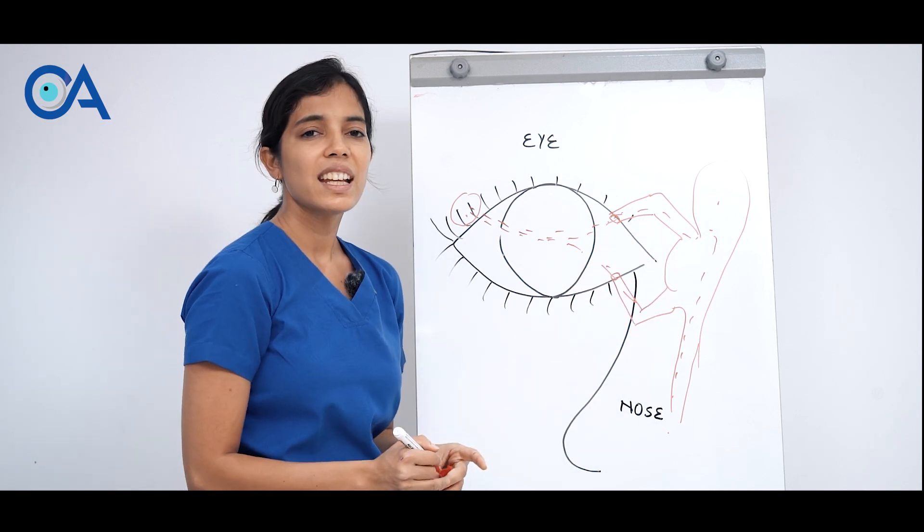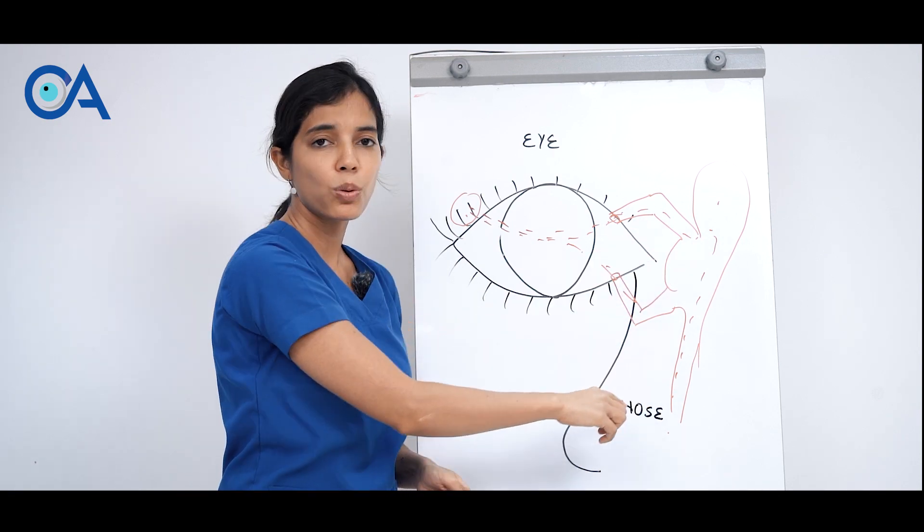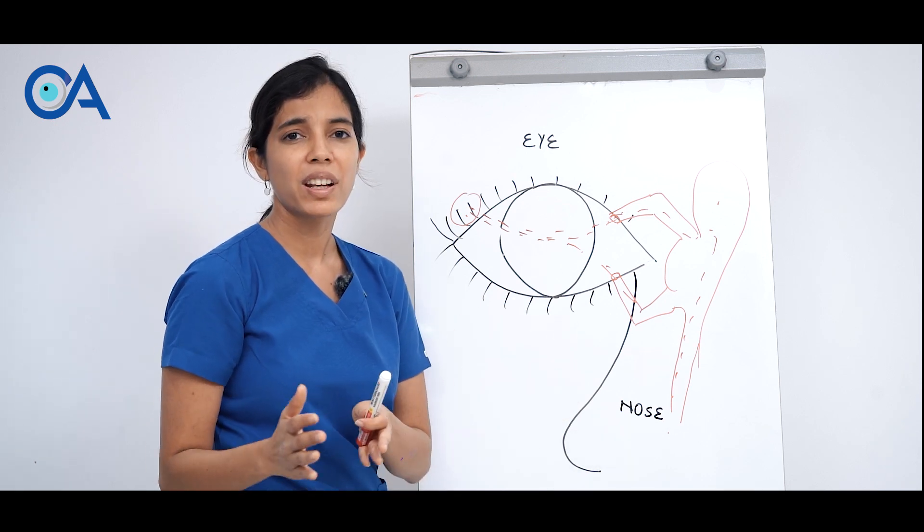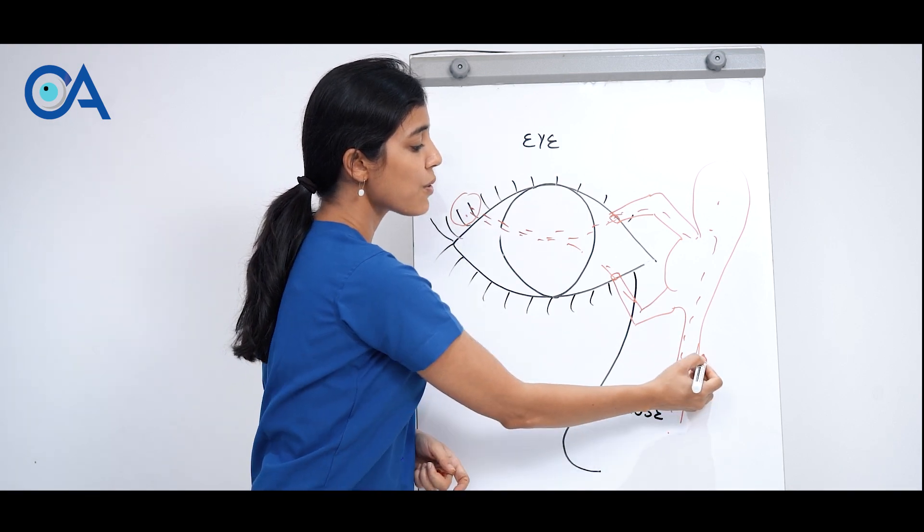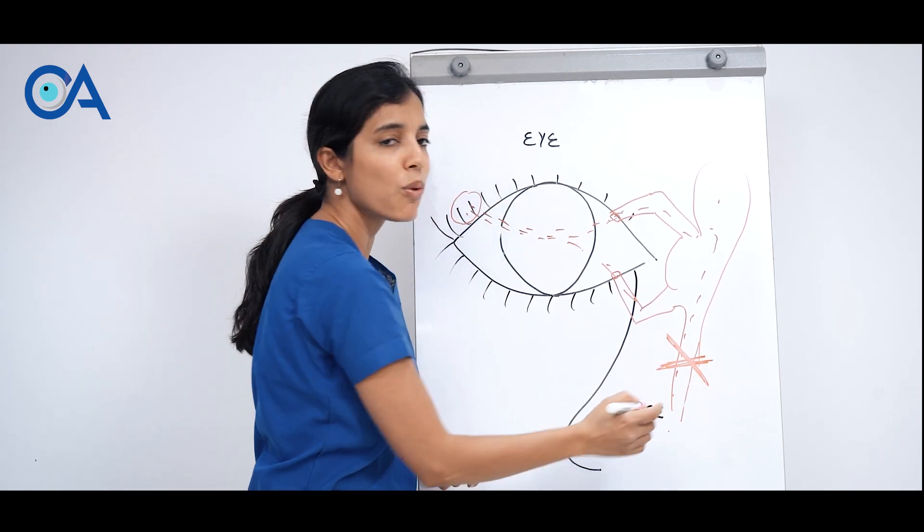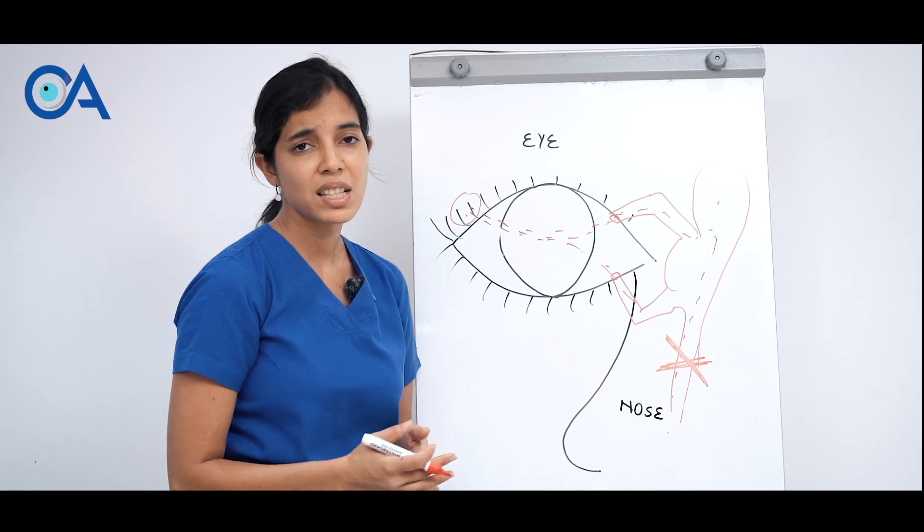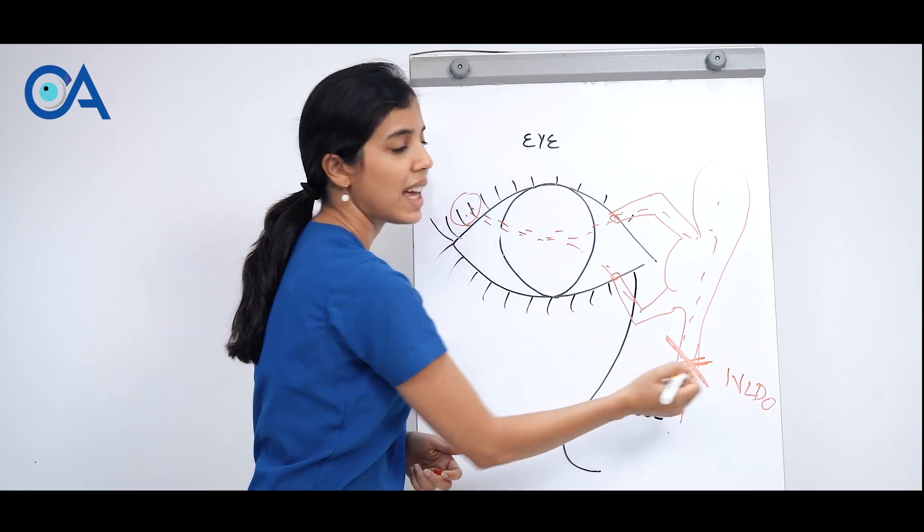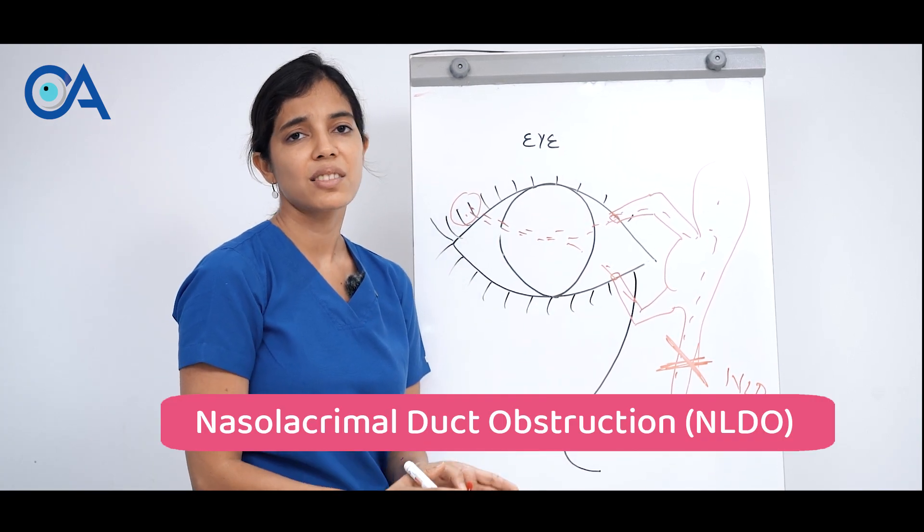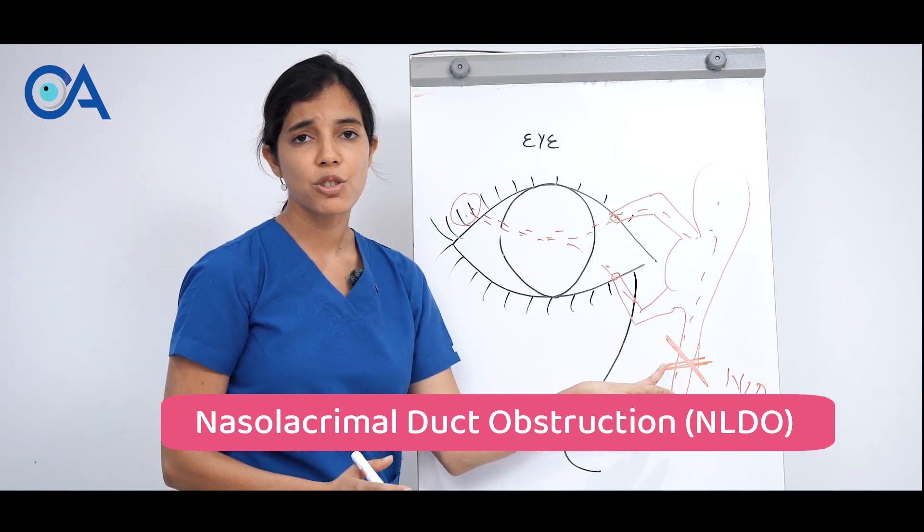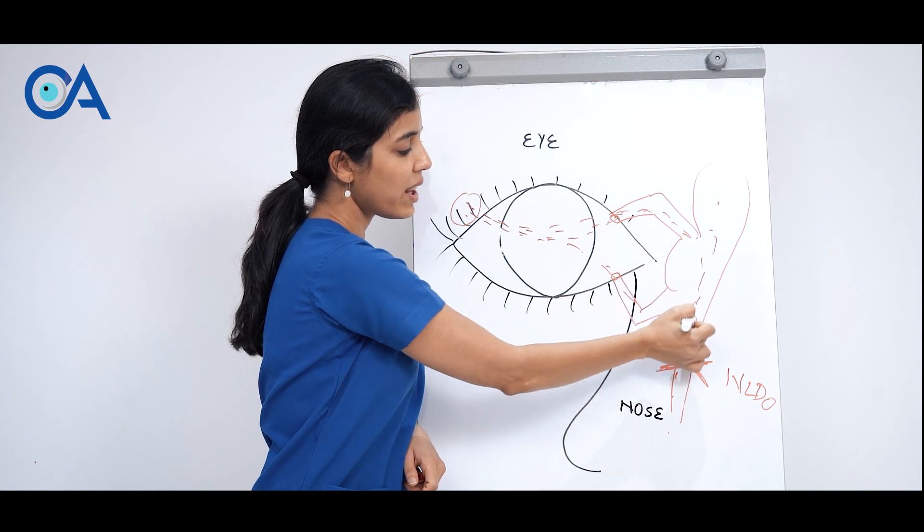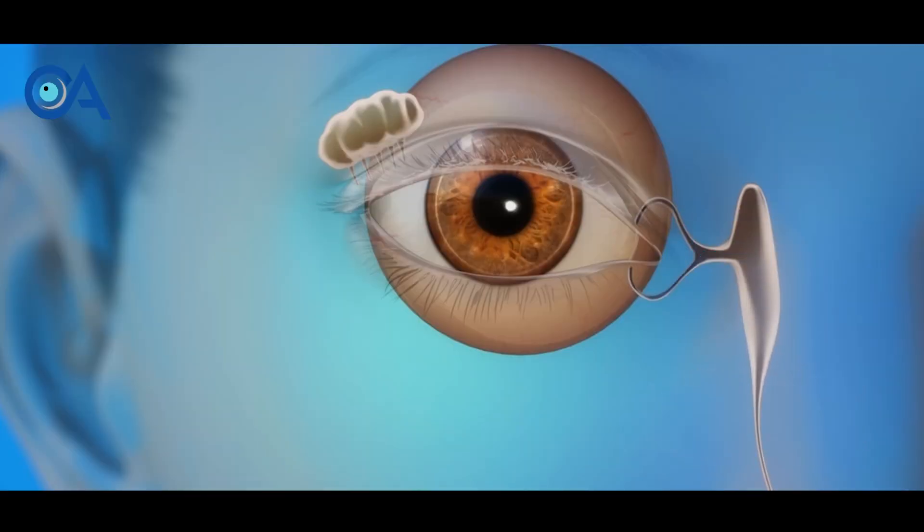But if you have blockage in any part of this pathway, then you can get tear duct pathway drainage problems. If you have a blockage here, this is one of the most common blockages that we see in our practice which is known as NLDO, nasolacrimal duct obstruction. When you have obstruction here, tears instead of going inside, they come out and there is a backflow and that's why you get watering.